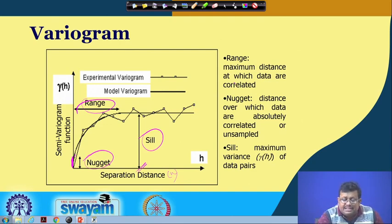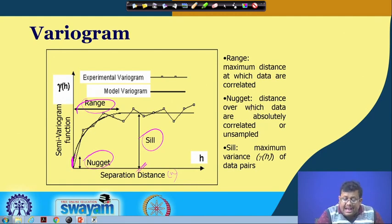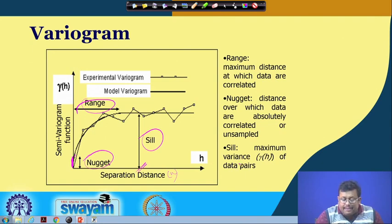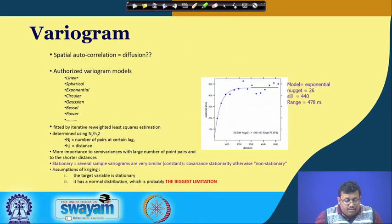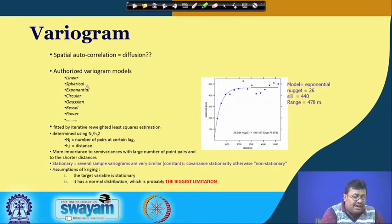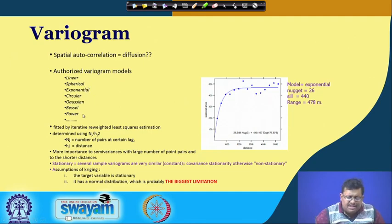Range is the maximum distance at which data are correlated — up to this distance data will be correlated, after which data become independent. Nugget is the distance over which data are absolutely correlated or unsampled, and sill is the maximum variance of the data pairs. There are several variogram model types: linear, spherical, exponential, circular, Gaussian, Bessel, power, and so on.